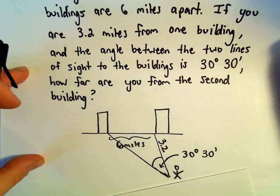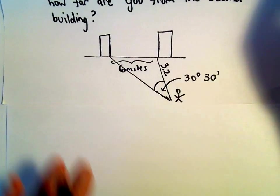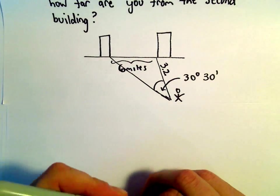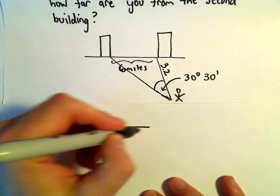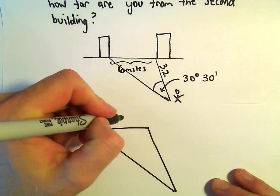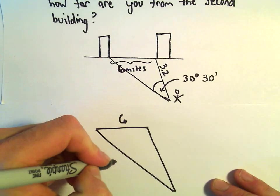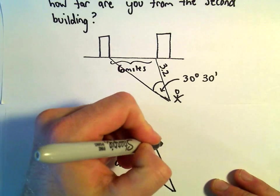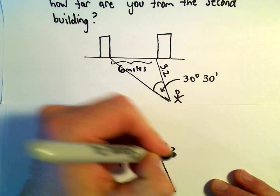So I'm going to redraw my triangle here a little bit. Okay, so it's six miles. We're trying to figure out this distance d. This is 3.2 miles.